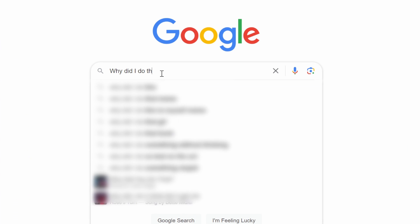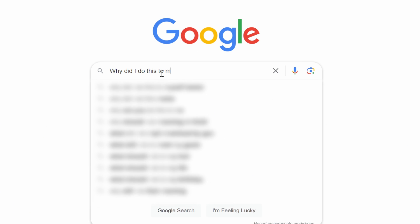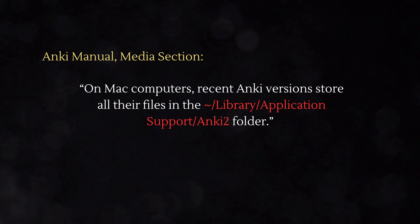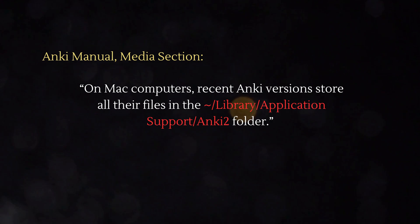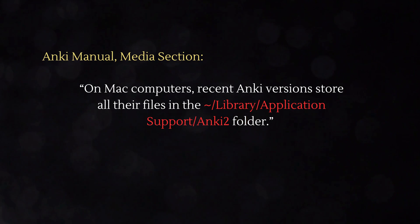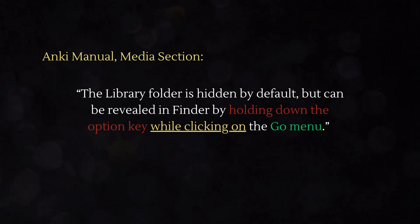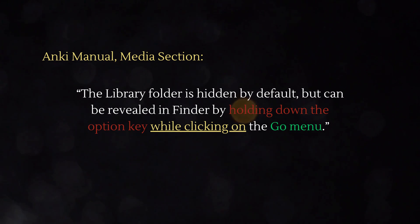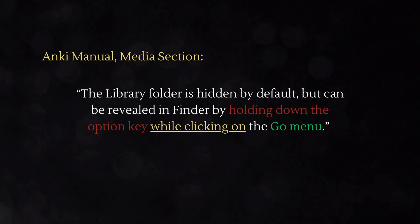For Mac users, open Google and search 'why did I do this to myself?' — then navigate to Library/Application Support/Anki2. The Library is hidden by default because you can't be trusted, but it can be revealed in the Finder by holding down the Option key while clicking on the Go menu.